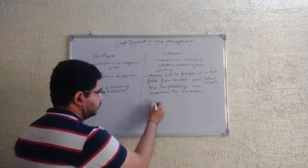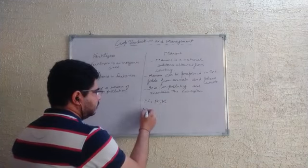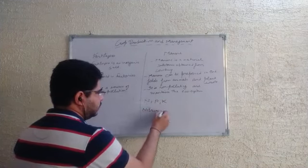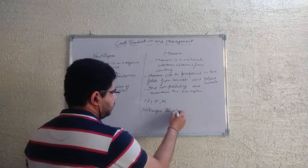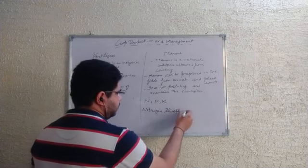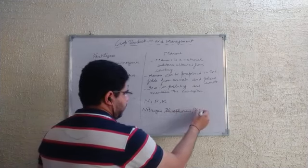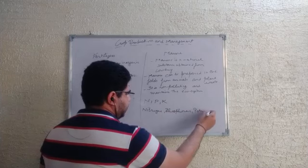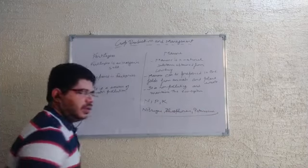Fertilizers contain NPK — that is Nitrogen, Phosphorus, and Potassium. These three nutrients are present in high amounts in fertilizers.